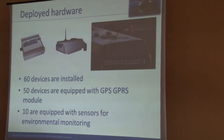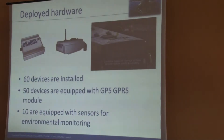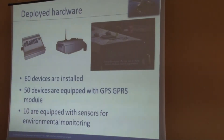Here are the devices. The first one is only for monitoring the location of buses — it's pretty easy to install, it's just important to place it somewhere not easily reachable. The device for EcoBus environmental monitoring will be placed on the roof of the bus, so it's a very sensitive device. In summary, there are just 60 devices total: 50 devices are just for location, and 10 are equipped with sensors for environmental monitoring.